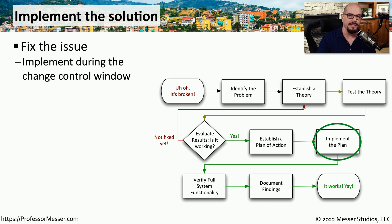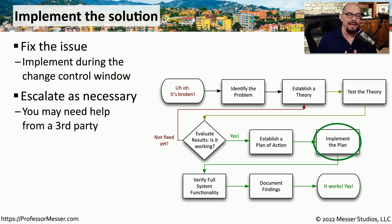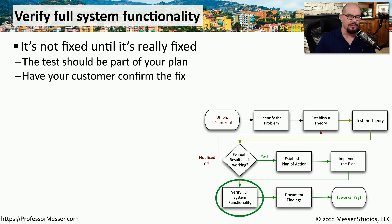Once the change control board gives us a time and date, we take all of our plans and implement the change in our environment. The change control window gives us a certain amount of downtime, and we want to be sure to complete everything within that window. If it's a very small window, we may need to pull in additional resources to perform multiple functions simultaneously. Once the fix has been implemented, we still need to verify it actually fixed the problem by performing a set of predefined tests to confirm the environment is working and the original problem is resolved.